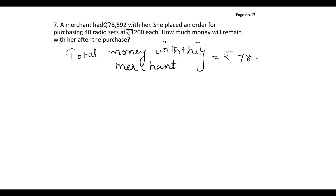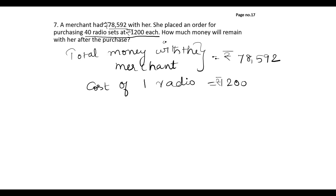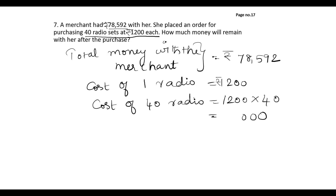So a merchant has some money. She is going to buy 40 radios and each radio costs 1,200. The cost of one radio is 1,200, so the cost of 40 radios will be 1,200 into 40, which equals 48,000. This is the amount she has to pay for the radios.